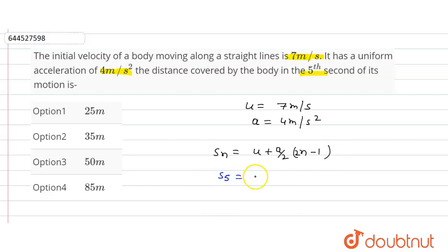5. So S5 will be how much? 7, u value, plus a is equal to 4 upon 2 into 2 into n value is 5 minus 1. Okay, so S5 will be how much? S5 is equal to 25 meter. Okay, so this will be our answer, 25 meter. So option C is the correct option.